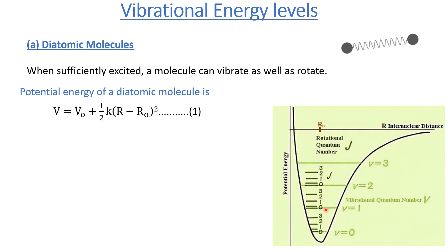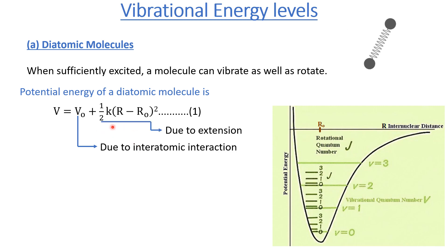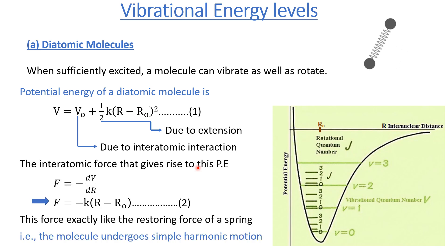It is a hybrid spectrum which consists of contributions from the vibrational as well as rotational energy. Today we are going to discuss the vibrational energy levels, since we have already discussed the rotational energy levels. The potential energy of a diatomic molecule is represented by equation number one, which consists of two terms: the V-zero term, known as the electrostatic potential arising due to inter-atomic interaction, and the elastic potential arising due to extension in the bond length.